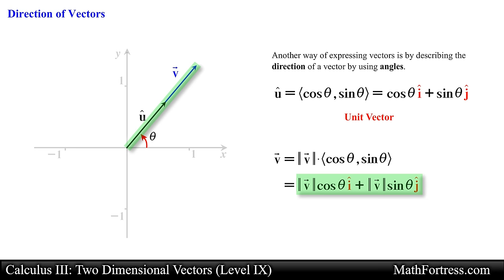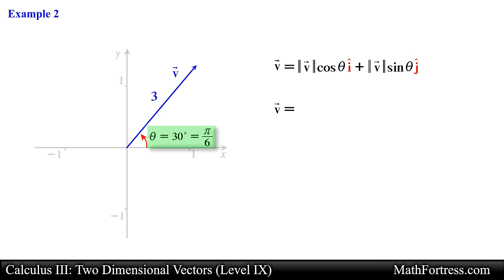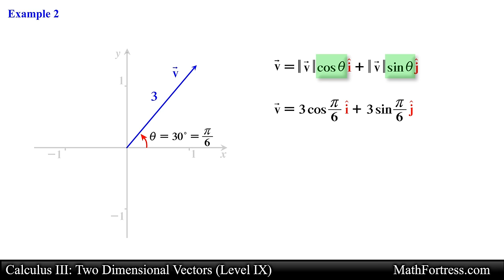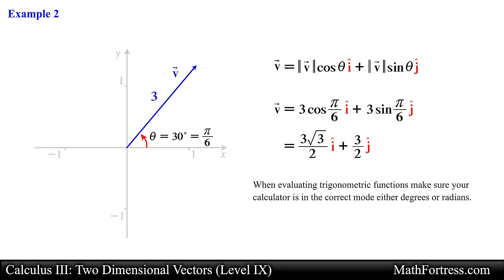For example, say vector v has a magnitude of 3 and makes an angle of 30 degrees (pi over 6 radians) with the positive x-axis. To write vector v as a linear combination of i-hat and j-hat, we multiply 3 by cosine of pi over 6 for the horizontal component and 3 by sine of pi over 6 for the vertical component. Simplifying, we obtain 3 times the square root of 3 over 2 i-hat plus 3 over 2 j-hat. When evaluating trigonometric functions, make sure your calculator is in the correct mode. In our next video we will go over various examples using unit vectors.